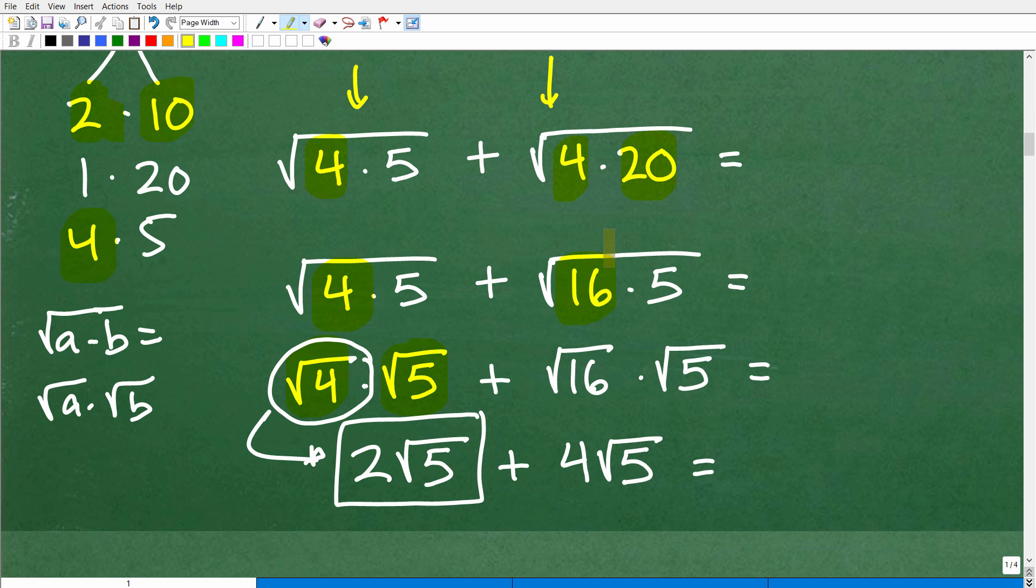So when we come over here, I have the square root of 16 times 5. I can write that as the individual square roots of the square root of 16 times the square root of 5. The square root of 16, of course, is 4. So that's going to be 4 times the square root of 5. So there you go.